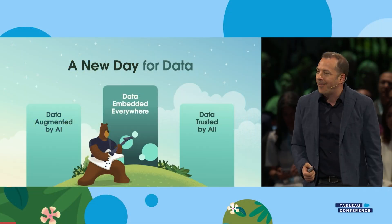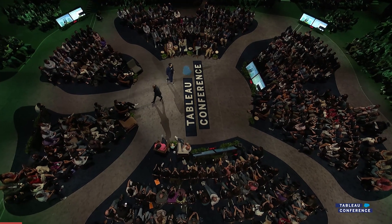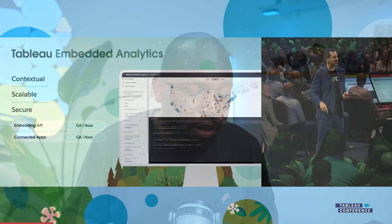Moving on, Francois handed over to Pedro, who talked about embedding. Embedding has been building momentum over the last two years, and the most important change — which I'll cover in a separate series of videos — has been the Embedding API version 3. That seems to have opened up a whole world of possibilities and feeds nicely into some of the announcements here at the keynote.